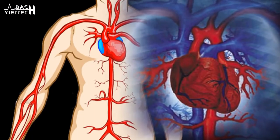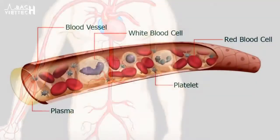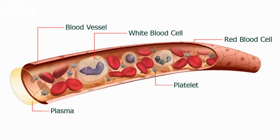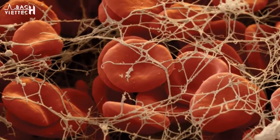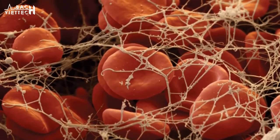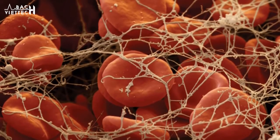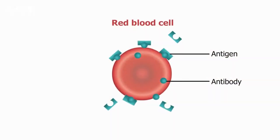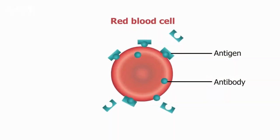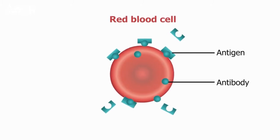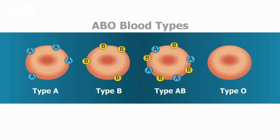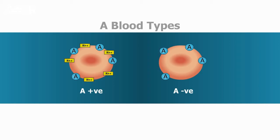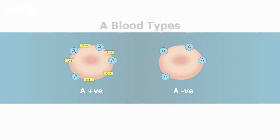An adult human has about four to six liters of blood circulating in the body. Blood consists of several types of cells, including white blood corpuscles (WBC) and red blood corpuscles (RBC), floating around in fluid called plasma. There are certain protein molecules called antigens located on the surface of the red blood cells, and antibodies which are in the blood plasma. The differences in human blood are due to the presence or absence of these antigens and antibodies, and individuals have different types and combinations of these molecules.